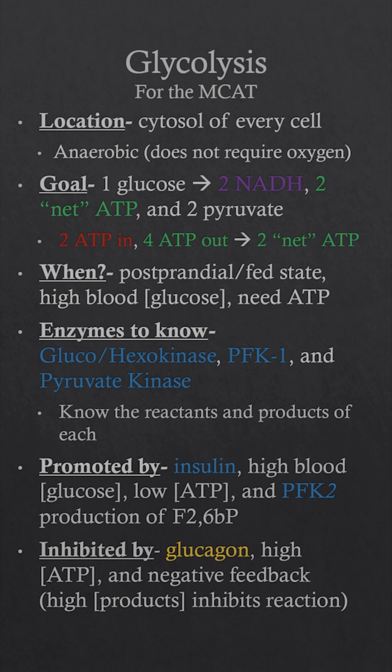Glycolysis is inhibited by the hormone glucagon, high energy or ATP levels, and negative feedback. Basically, if we have a large amount of products — whether that be pyruvate or ATP — we don't need to be running glycolysis anymore, so they go back and inhibit it.